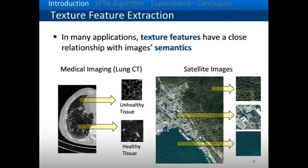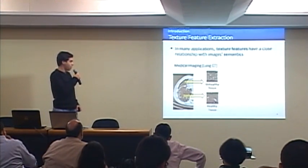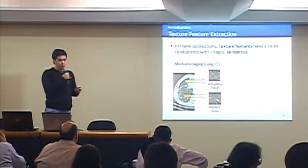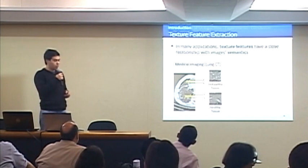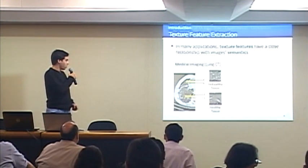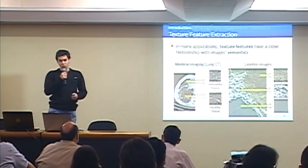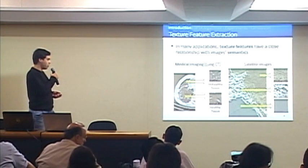This work is about texture feature extraction, and why texture features are important. In many applications, texture has a close relationship with image semantics. For example, in lung computed tomography, we can determine whether a tissue is healthy or unhealthy based on texture. Or in satellite images, we can use textures to infer whether a terrain is a forest, buildings, or water.